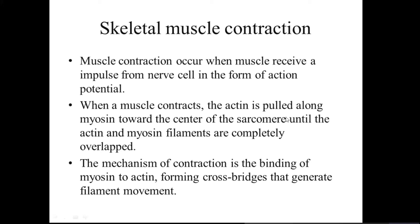When a muscle contracts, actin is pulled along myosin toward the center of the sarcomere. The sarcomere — the functional unit — contracts and relaxes repeatedly. It contains lighter and darker bands, representing thin actin and thick myosin filaments that overlap during contraction. Cross-bridges form where actin filaments attach to myosin, generating filament movement. Myosin contains a head-like structure that forms this binding site with actin.